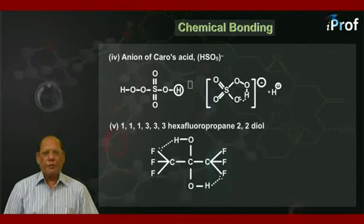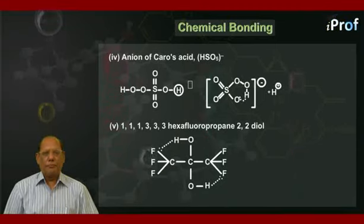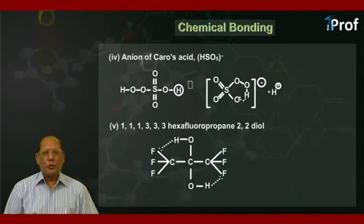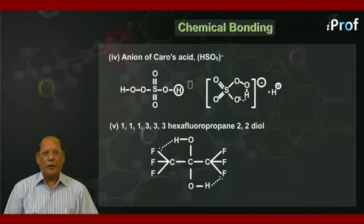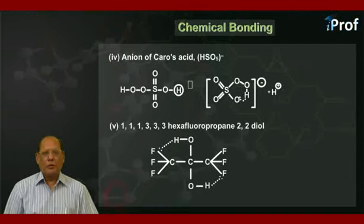The fifth example is 1,1,1,3,3,3-hexafluoropropane-2,2-diol. This is the IUPAC name of the compound shown below. Here we find that there are two hydrogen bonds in the molecule, between fluorine and oxygen.